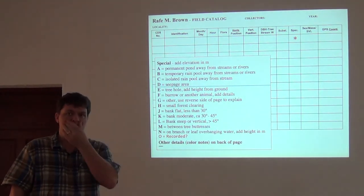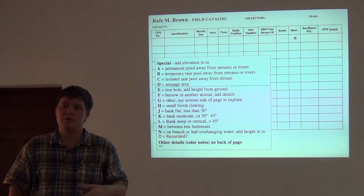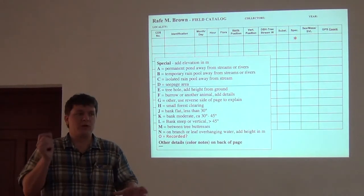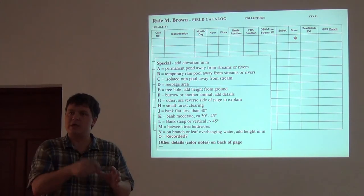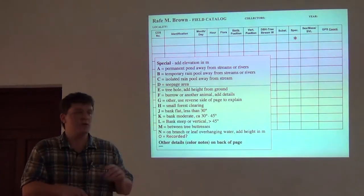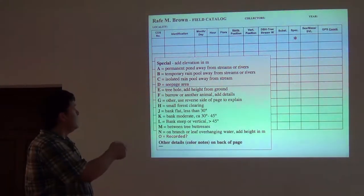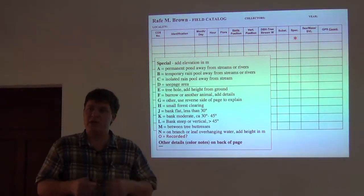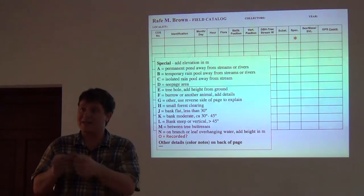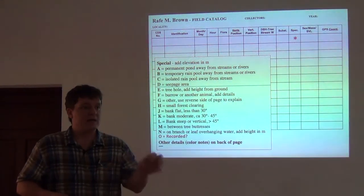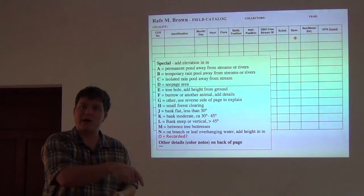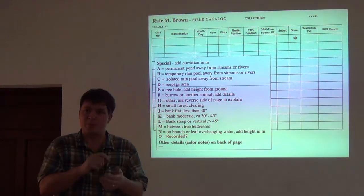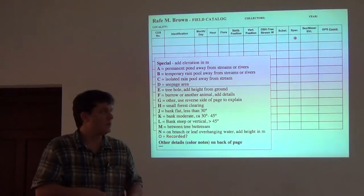This requires that while you're out collecting frogs, you put every frog into a separate bag. In that bag, you put a note with your original identification number. Some people take their field tags — the ones they'll eventually tie on the specimen — into the field with them, and as they catch the frog, they pull off a tag and throw it in the bag with the frog. That's a great way to do it. Or you can cut up little pieces of paper, put that same number on it, and throw it in the bag.